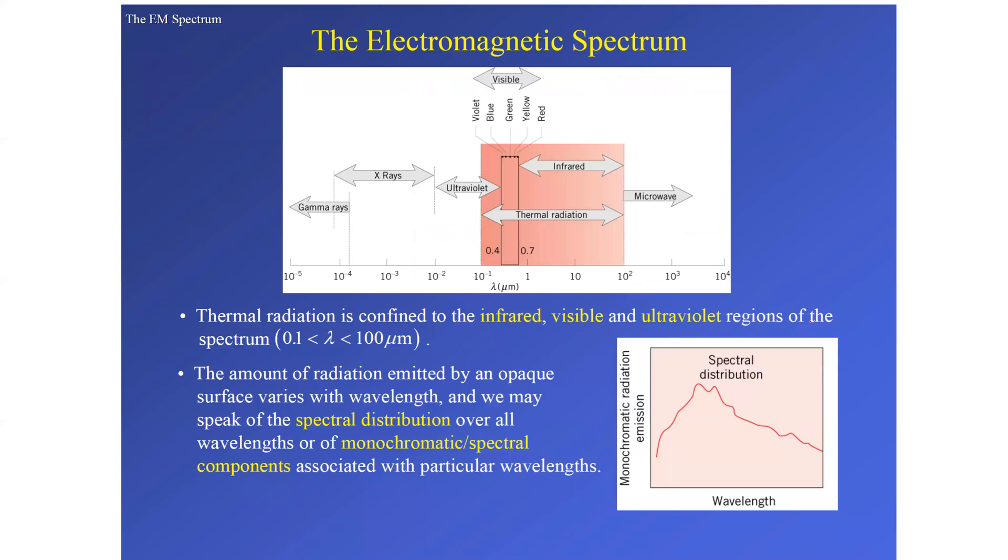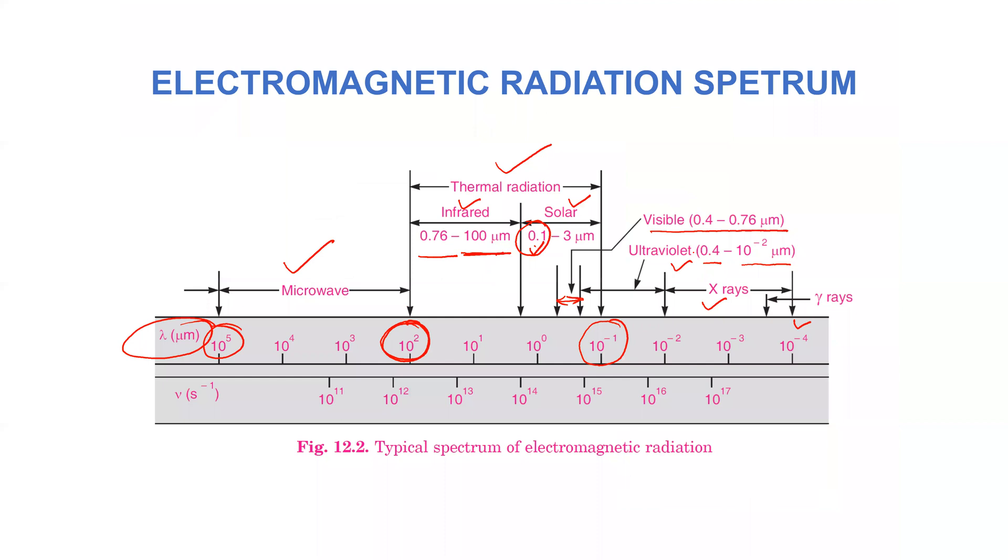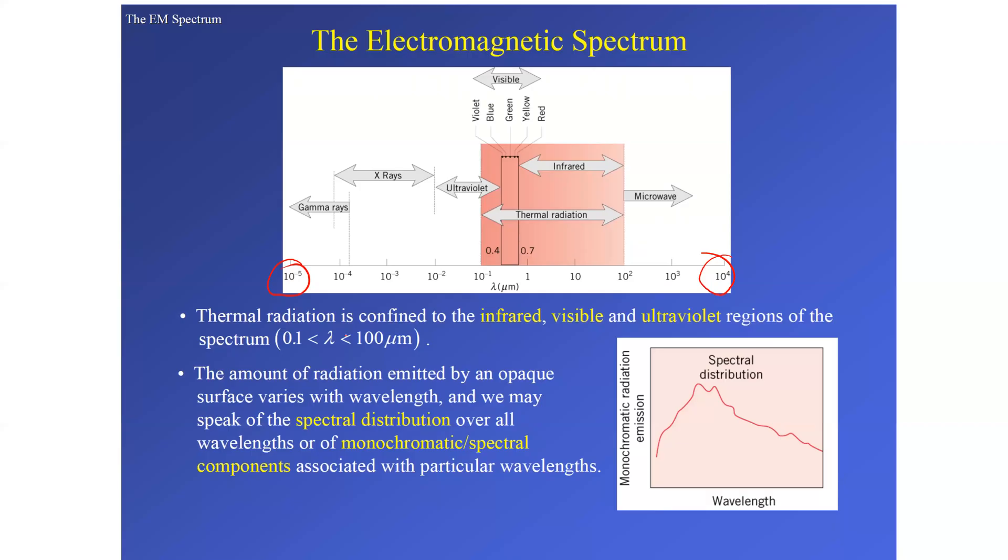Once again we have the same diagram and it shows the various colors also. Here you can see now it is in the reverse order. Here we have the lowest value and here we have the highest value of lambda. In the previous diagram, we started from the larger value and then in this direction the wavelength was reducing. It is now in the opposite direction, so once again there is no such difference. Only thing is here that we have tried to show the visible radiation where it has different colors: violet, blue, green, yellow, and red.